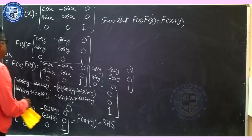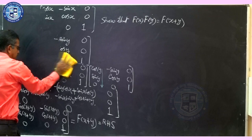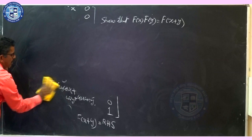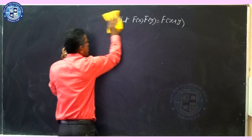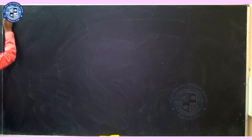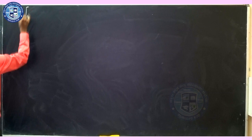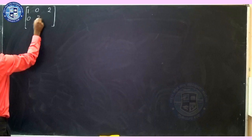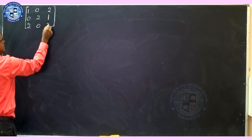Question 4, likely for 5 marks. Given matrix A of order 3×3 with elements: first row [1, 0, 2], second row [0, 2, 1], third row [2, 0, 3]. We are asked to prove that A³ − 6A² + 7A + 2I = O (null matrix). Note that A² does not mean squaring individual elements — A² means A×A. There are a few such problems in the NCERT book; I will explain one and ask you to practice the rest at home.